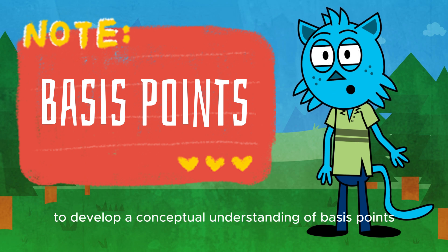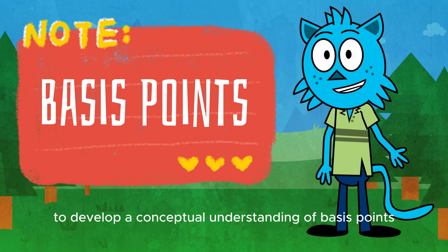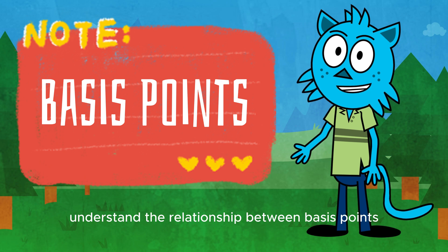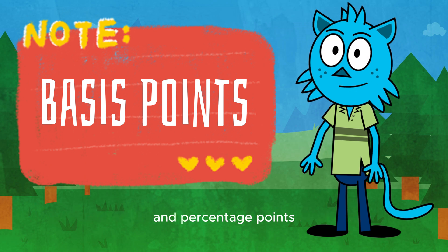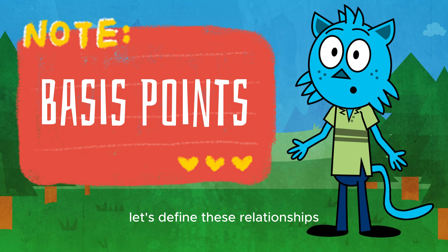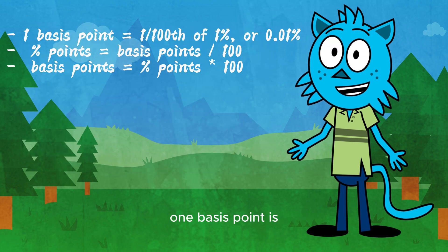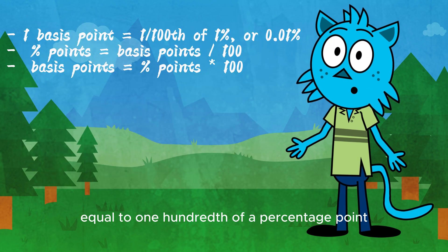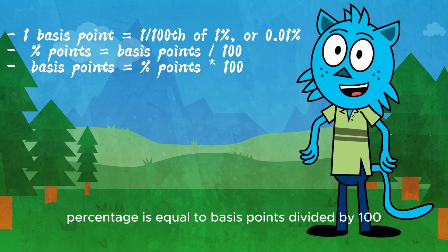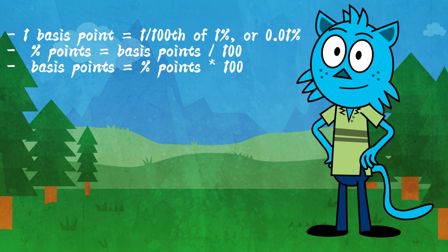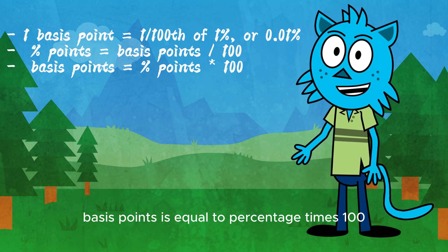To develop a conceptual understanding of basis points, it is crucial that you understand the relationship between basis points and percentage points. One basis point is equal to one hundredth of a percentage point. Percentage is equal to basis points divided by one hundred. Basis points is equal to percentage times one hundred.